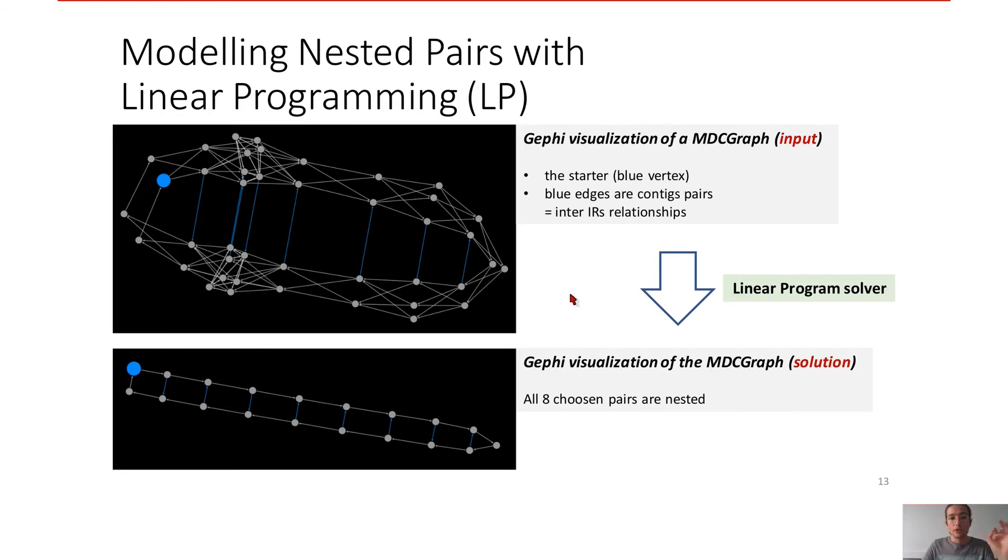So for the focused solution example here, this is the solution. We use a linear program solver and we obtain this solution. You can see that all eight chosen pairs are nested.